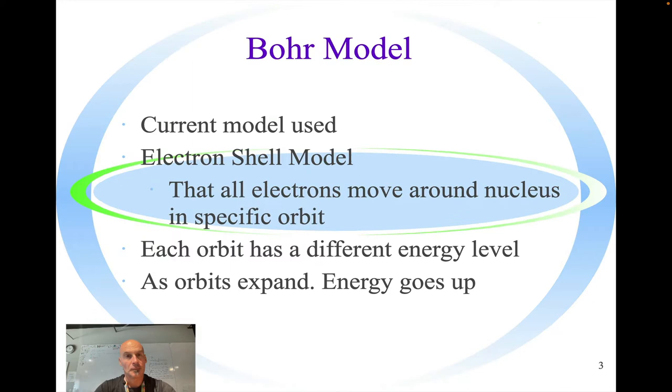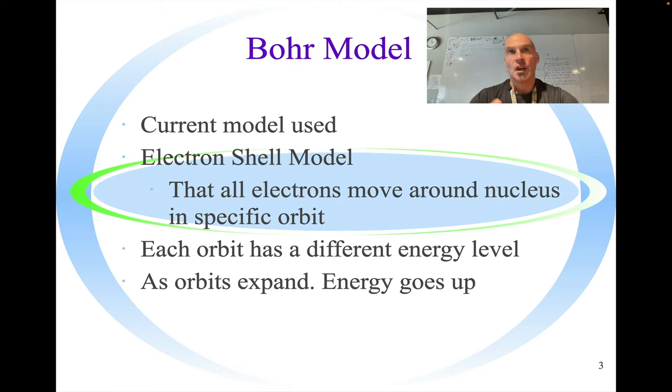So we're going to talk about the Bohr model. The Bohr model is one of the current models used to explain the structure of an atom. It's called an electron shell model, so that all electrons move around the nucleus in a specific orbit. Each orbit has a different energy level, and as the orbits expand, the energy level goes up, which means the energy level is higher the further away you get from the nucleus.